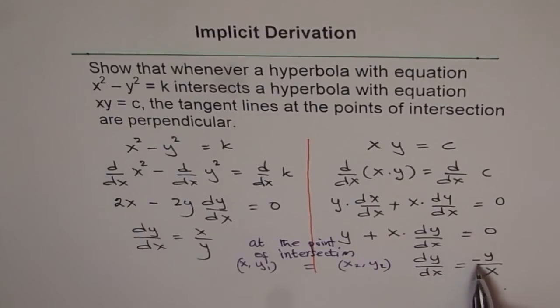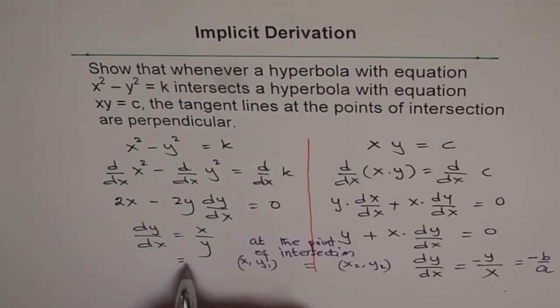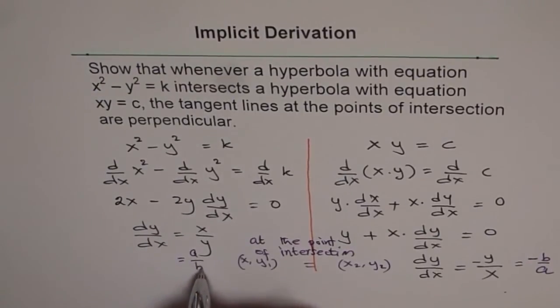So a over b, and I'll get slope of, in that case, let it be a and b. So what slope I get? I get slope of negative b over a here, and I get a slope of positive a over b here.